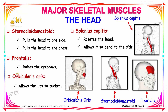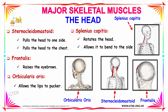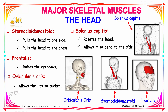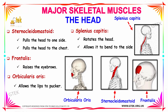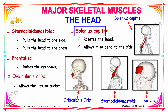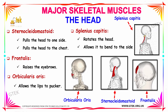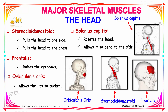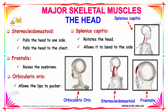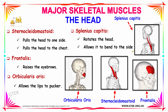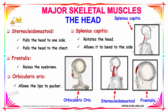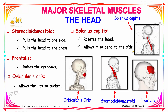Next we have orbicularis oris. This muscle is located near the lips and it allows the lips to pucker. The next muscle is splenius capitis. Splenius capitis is located near the neck to the thoracic region and it rotates the head and allows it to bend to the side. These are the muscles related to the head.